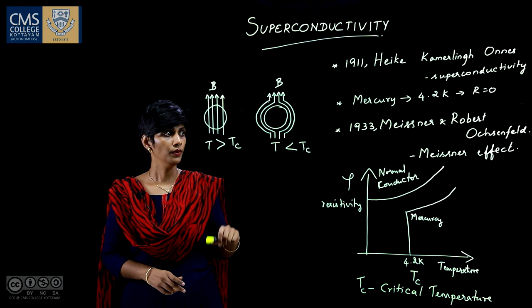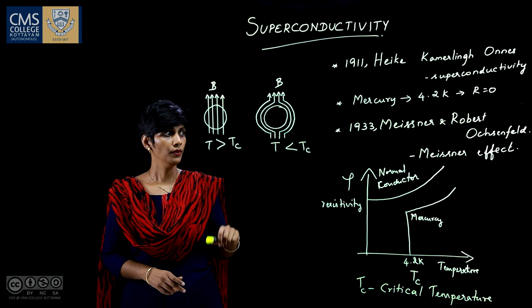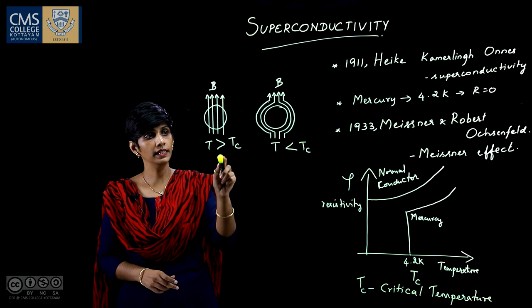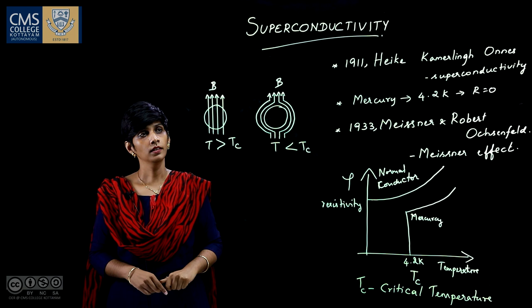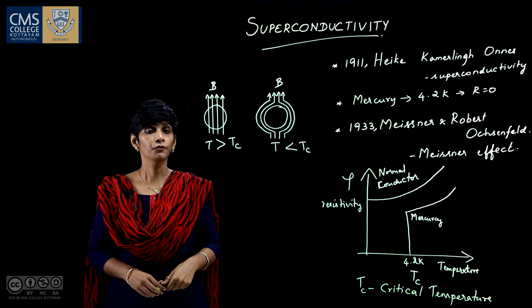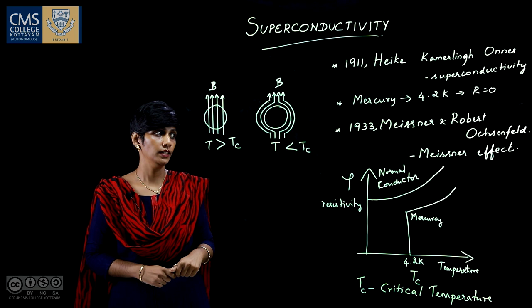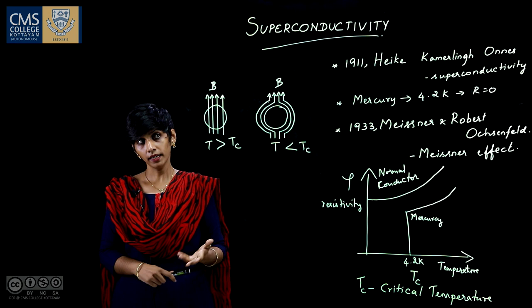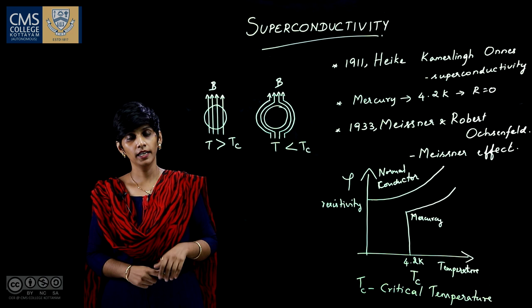The Meissner effect is also reversible. When we increase the temperature of the superconductor above critical temperature, the magnetic flux lines start penetrating into the superconductor. One of the fascinating aspects of the Meissner effect is quantum magnetic levitation — a method in which we can suspend an object in air without any other support.